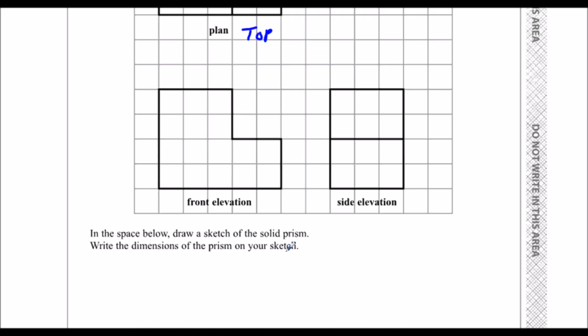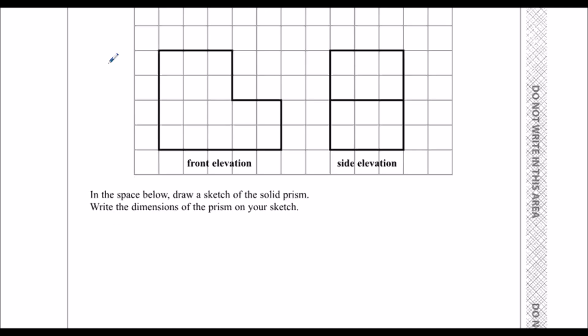And then we need to draw a sketch of the prism. So a prism is a shape that's a 3D shape that's the same the whole way through. It's got the front and it's just extended backwards, so it's going to look like it does at the front.